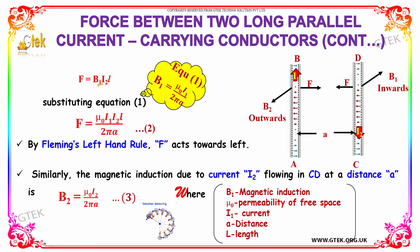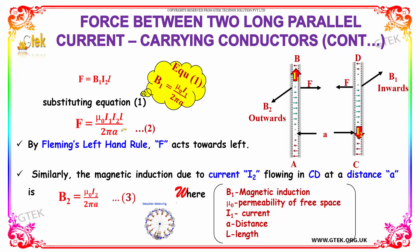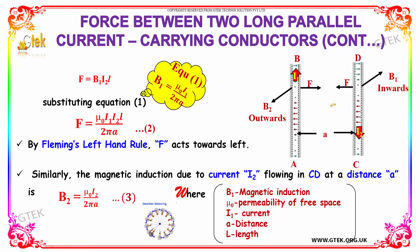Force is equal to B1 into I2 into L, and since B1 equals μ₀ into I1 divided by 2πA, substituting this into the equation, you will be getting F equal to μ₀ into I1 into I2 into L by 2πA. By Fleming's left-hand rule, F acts towards the left.